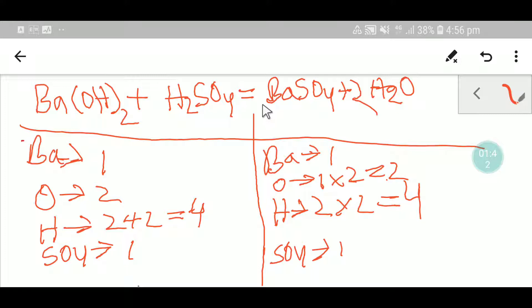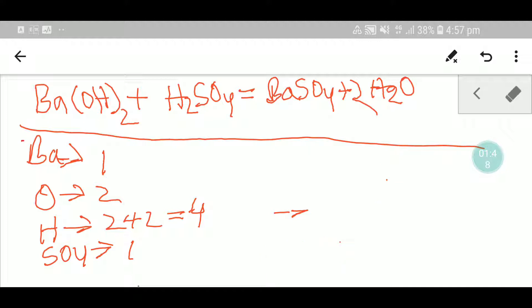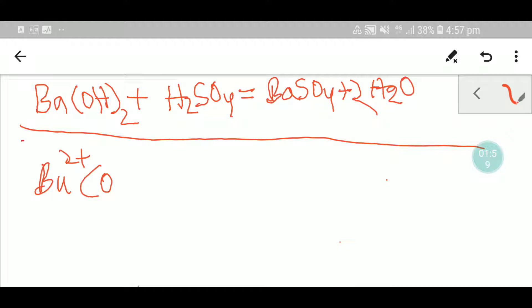You know that barium has 2+ and hydroxide is 1-. This is sulfuric acid, sulfate is 2-. What you can do is this positive will go with this negative sulfate ion.